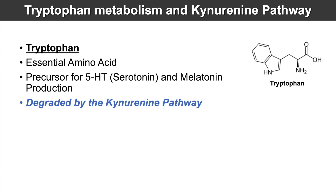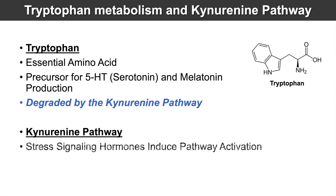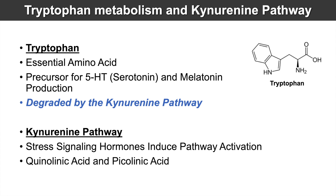Tryptophan is degraded by the kynurenine pathway. The kynurenine pathway is the pathway that metabolizes and degrades tryptophan, and interestingly it is activated by stress signaling hormones. The two end products of the kynurenine pathway are quinolinic acid and picolinic acid.